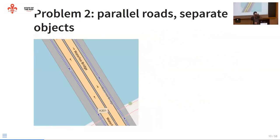A second issue with the representation in OSM is when you have dual carriageways — a one-way road split into pieces with some kind of median in between — these are mapped as separate objects pointing in different directions. In this case there's also a one-way cycle track on either side of the bridge, which is a separate object as well.